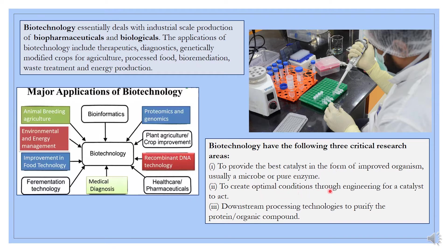The second area is to create optimal conditions through engineering for a catalyst to act. Different types of machineries are utilized in this field. The engineering part is also very important in biotechnology — we need devices like electrophoresis devices, centrifugation devices, and micropipettes. A number of devices are utilized for performing experiments. What type of devices will be helpful for performing experiments or increasing production is also a very important field where a lot of research is going on.